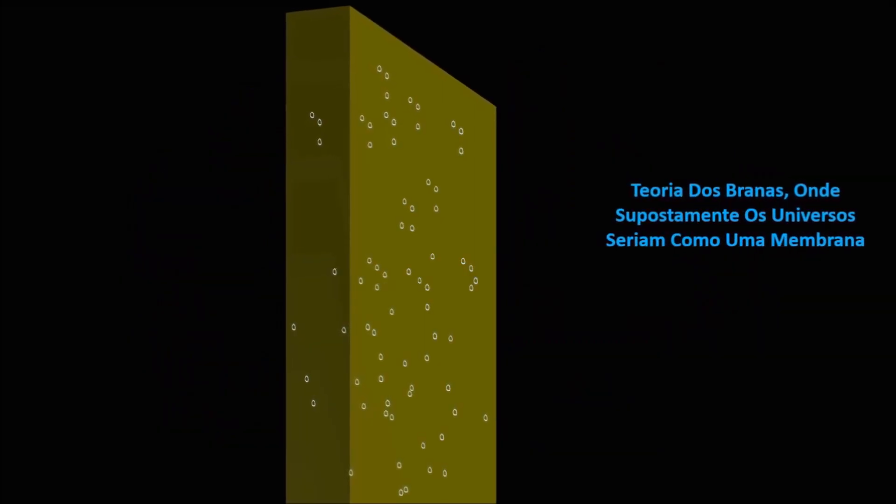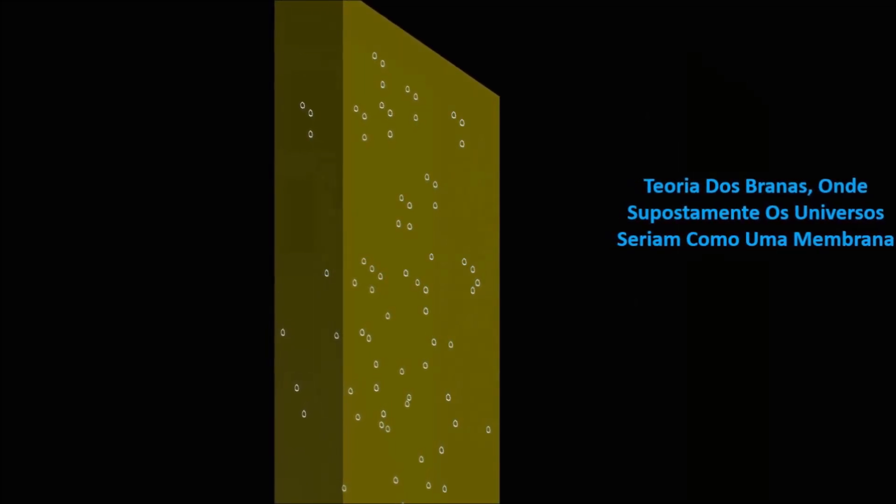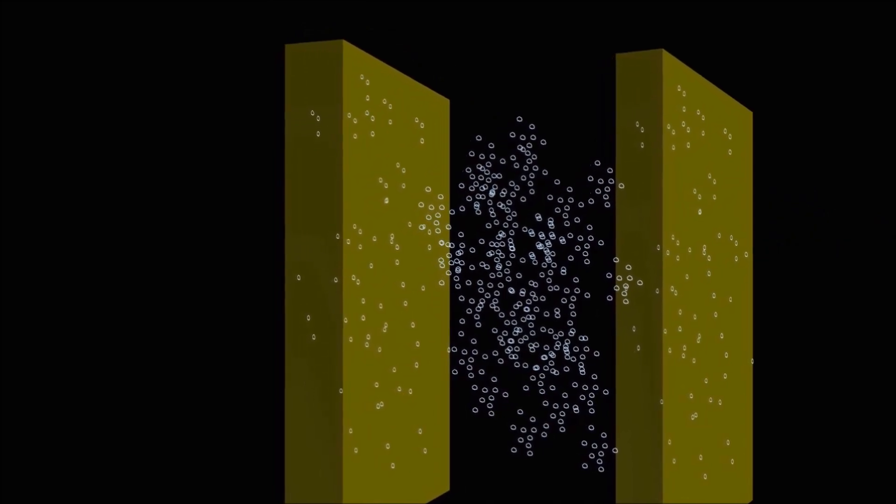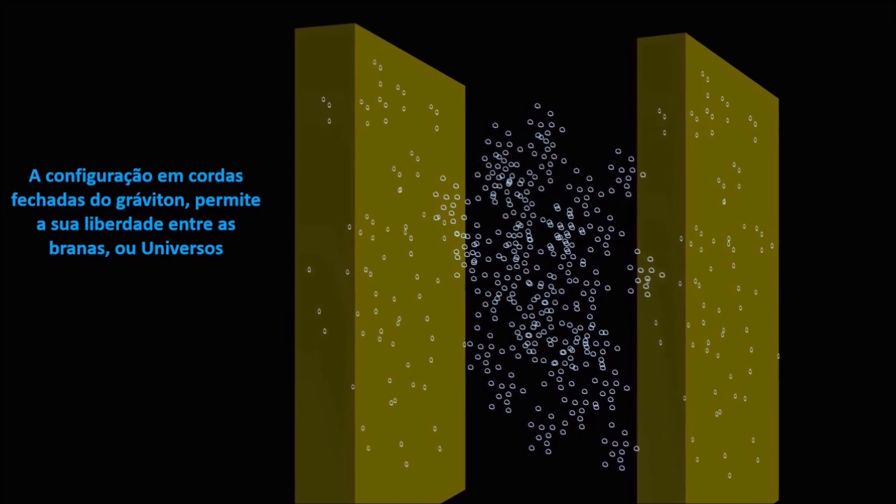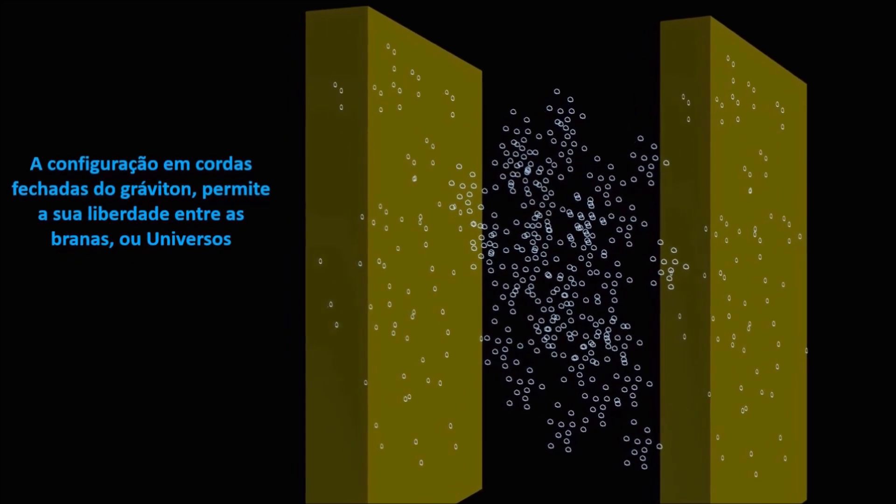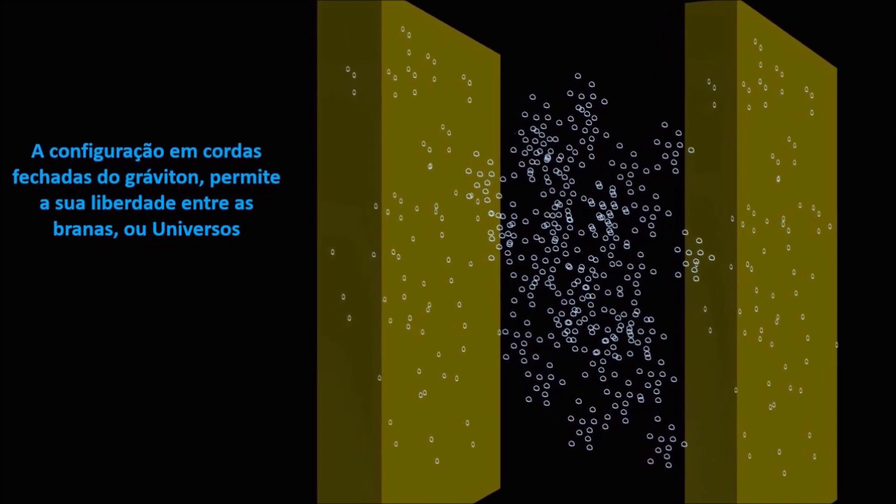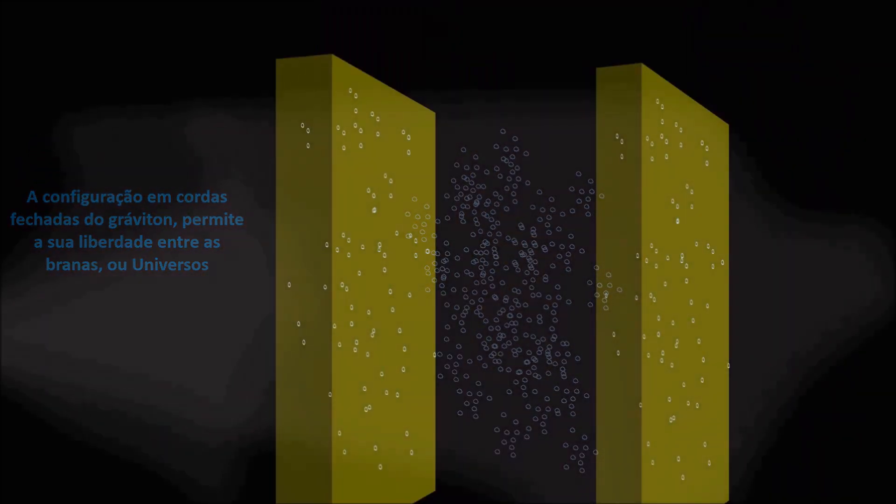É interessante observar que na teoria das cordas os gravitons são descritos como cordas fechadas sem pontas. Assim, eles não seriam limitados por branas e poderiam mover-se com liberdade entre elas. Lembrando que branas é a abreviação de membrana, que na teoria dos branas descreveria nosso universo como uma brana ou membrana. Voltando então aos gravitons, esse vazamento entre branas explicaria porque detectamos a gravidade em nosso universo com a força interativa mais fraca dentre as outras forças.